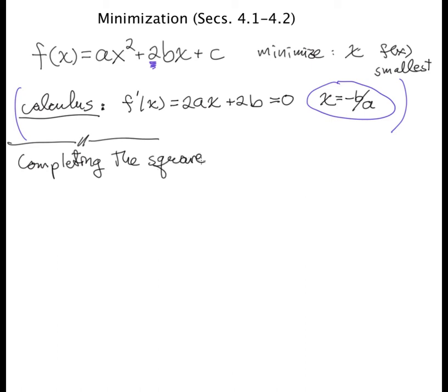Now, I know you all remember how to do this. So I'll just remind you that the way you complete the square is you write this as a times x plus some constant squared plus some other constant. And what these turn out to be is b over a here. And c minus b squared over a here.